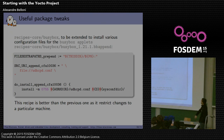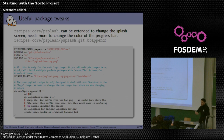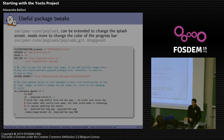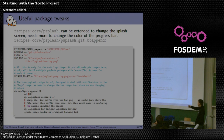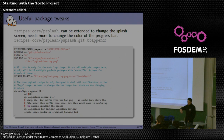You can also change the splash screen. By default you'll have a Yocto project splash screen. To change it, you take your PNG file, convert it to a C header file, and that header gets included in the build.